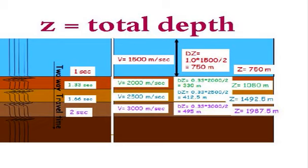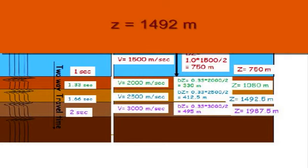Third zone. V equals 2,500 meters per second. DZ equals 0.33 seconds times 2,500 divided by 2 equals 412.5 meters. Z equals 1,492 meters.